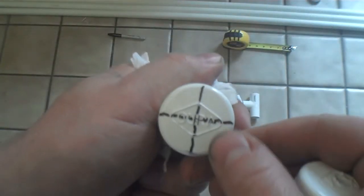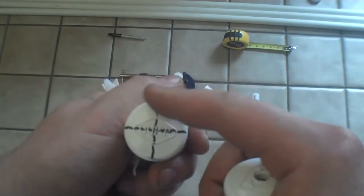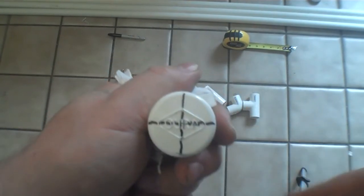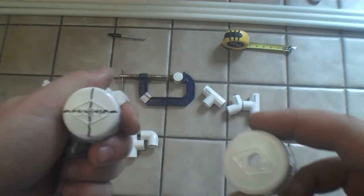You want to mark them. It's pretty easy to drill a hole in the center. Just mark along one way, mark along the other way, and where they intersect is where you're going to drill.